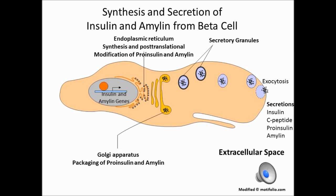On this slide you can see the cleavage products of pro-insulin. Inside the secretory granules we find insulin and C-peptide. We also find a little bit of pro-insulin because not all of the pro-insulin is cleaved within the secretory granules. And there is a fourth hormone within those granules, which is amylin, which has to do with the control of food intake and gastric emptying time. Amylin is also involved in the formation of amyloid in type 2 diabetics.